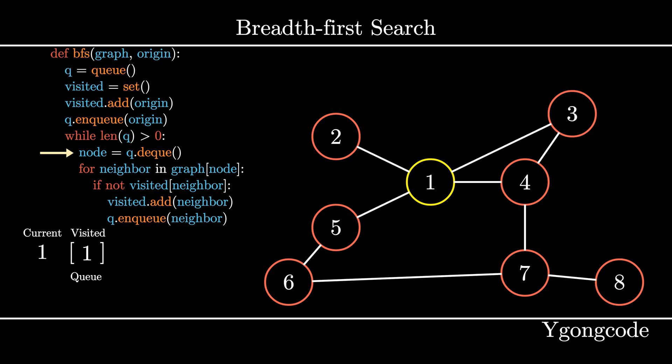Afterwards, we look at our graph, which is represented by an adjacency list, to see if it has any neighbors. We can see that 1 has 4 neighbors, 2, 3, 4, 5. We mark them as visited and add them to our queue in no particular order.